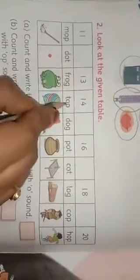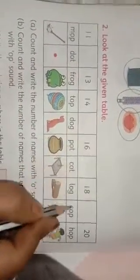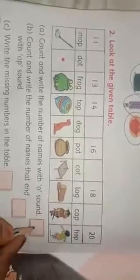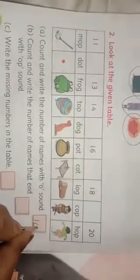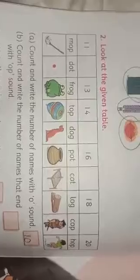One, two, three, four, five, six, seven, eight, nine, ten. So we write here ten number. Ten words are O sound. Second question.